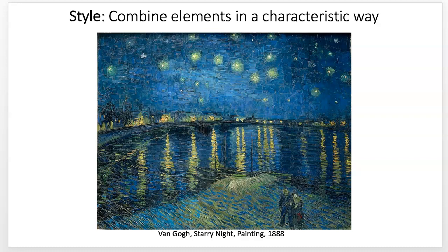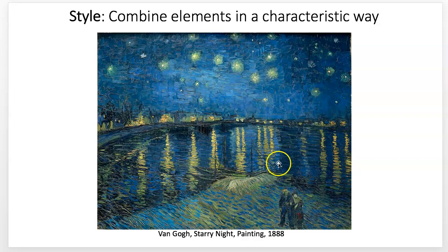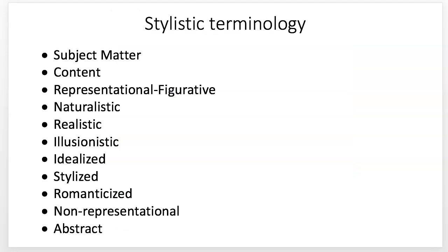A few more terms to cover. Style is elements combined in a characteristic way. This is characteristic of Van Gogh, but also of Post-Impressionism — dabs of paint thickly applied to a surface. The elements are blue, yellow, paint, shapes, line — but done in a characteristic way, and that's how we get the term style.